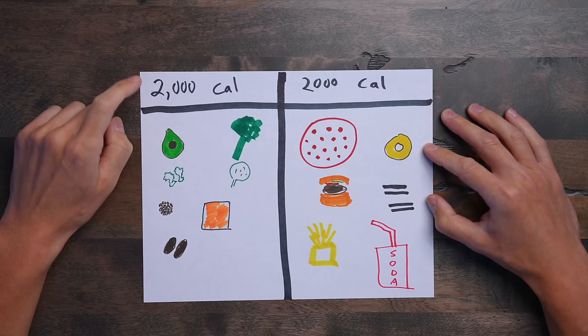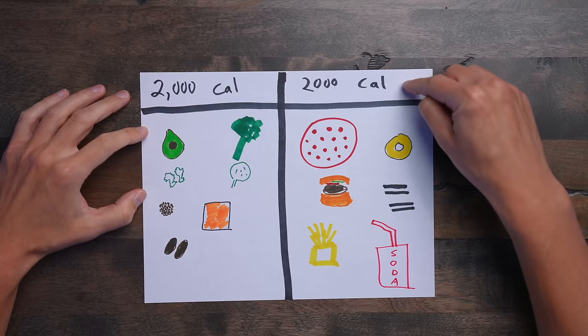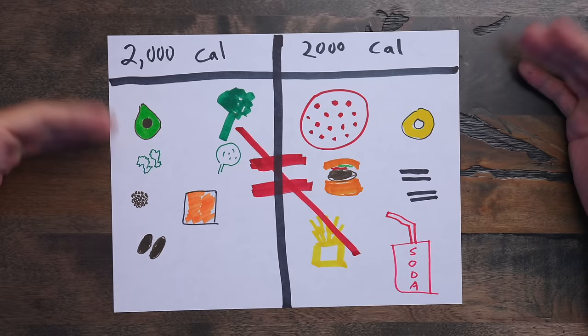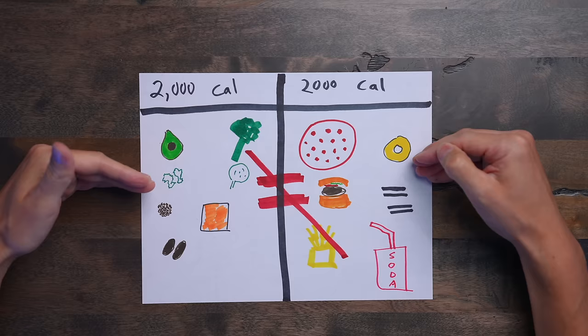And this is when your body goes into energy save mode, just like your laptop or your cell phone. And a second major point when it comes to caloric restriction is that not all calories are created equal. 2,000 calories from avocados, broccoli, kale, spinach, quinoa, salmon, almonds is not the same as 2,000 calories from pizza, donuts, hamburgers, Oreos, soda, and french fries. Absolutely not the same.